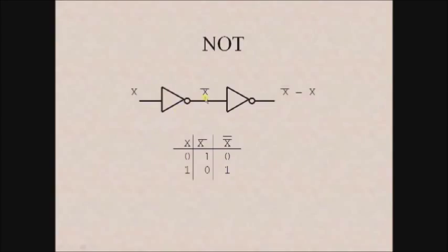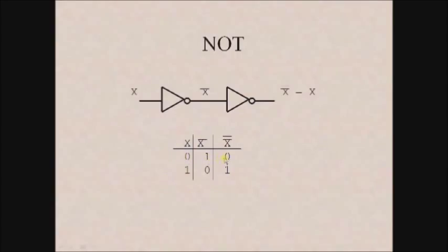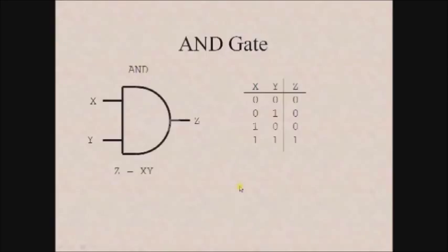This is how we represent a NOT symbol, that is x bar. Here we have taken an example with two NOT gates: the input to the first NOT gate is x, the output is x bar, and this x bar is again given as input to another NOT gate. Therefore, we ultimately get the output as x bar whole bar, where both bars cancel and the output becomes x. The truth table confirms: if x is 0, x bar is 1 and x bar whole bar is 0; if x is 1, x bar is 0 and x bar whole bar is 1.